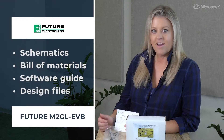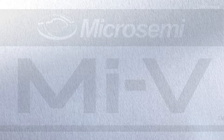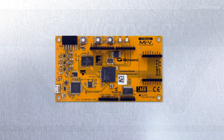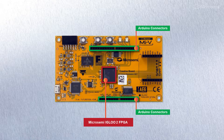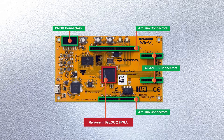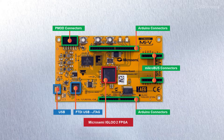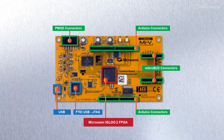Here are some of the key hardware features of the board: a 25,000 logic element Igloo 2 family FPGA, Arduino Shield, PMOD, and MicroBus interface connectors, as well as a USB port used for powering the board, programming the FPGA, and communicating to your PC.